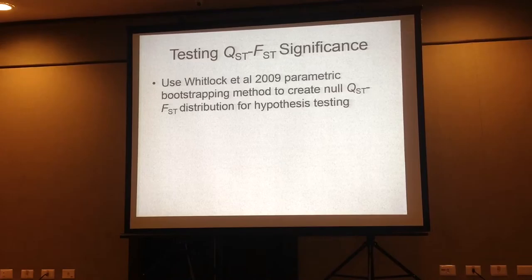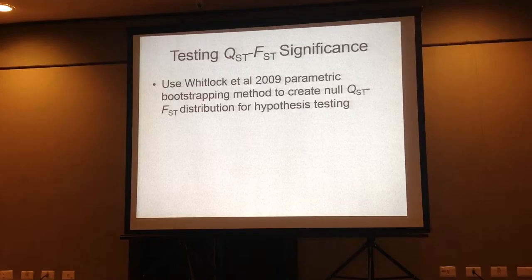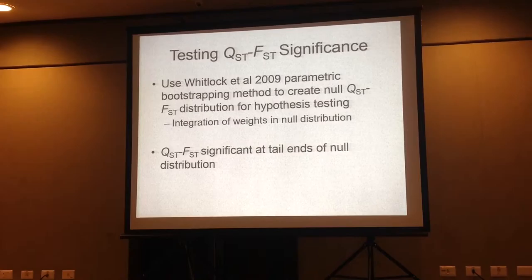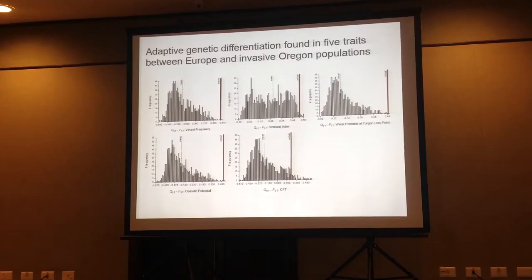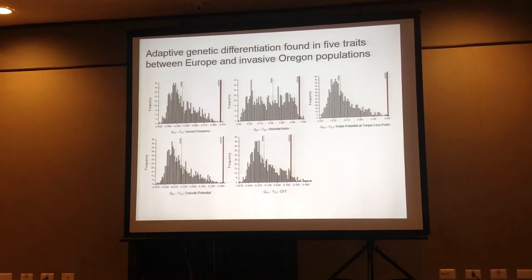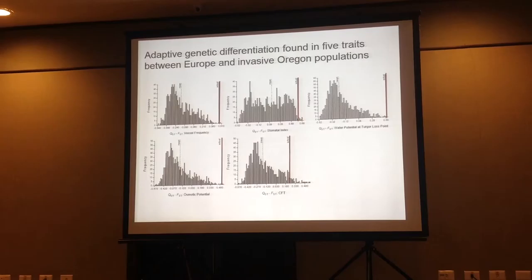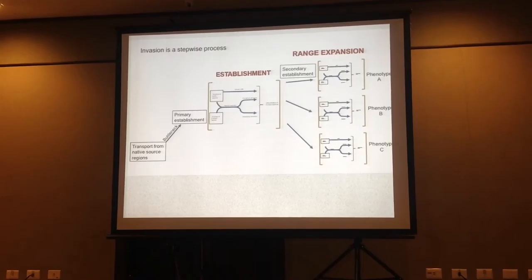To test for QST-FST significance, I utilized the Whitlock et al. 2009 parametric bootstrapping method to create a null distribution of QST-FST, integrating my weights into the null distribution as well. If QST-FST is significant at the tail ends of the null distribution, we consider that evidence of selection. Here are the results of those null distributions — these graphs are histograms of the null QST-FST distribution for each trait, and the red lines are the actual QST-FST values. The QST-FST is at the upper tail end of each of these null distributions, signifying adaptive genetic differentiation between the European native and invasive Oregonian populations.